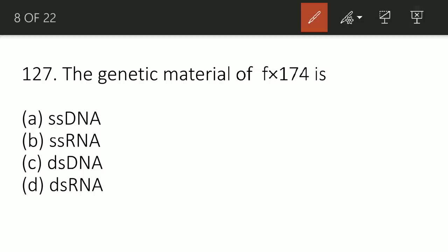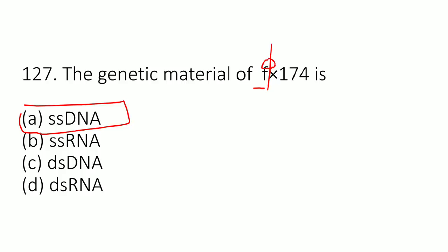The genetic material of φX174 - here is a typing error, it should be φ. What is φX174? Which is the genetic material? The correct option is option number A: single-stranded DNA. φX174 is a bacteriophage, a single-stranded DNA virus, and the first DNA-based genome to be sequenced. Remember, which one is the first DNA-based genome to be sequenced? Bacteriophage φX174.